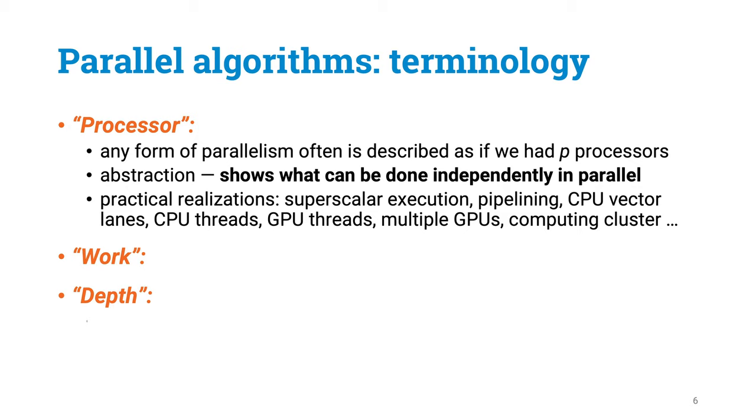Second, when we analyze parallel algorithms, we usually talk about work and depth. Work is basically just the total number of operations. You usually want work-efficient parallel algorithms. These are algorithms in which you do the smallest possible amount of work in total. But sometimes doing a bit more work makes it possible to parallelize better, so there might be a trade-off here.